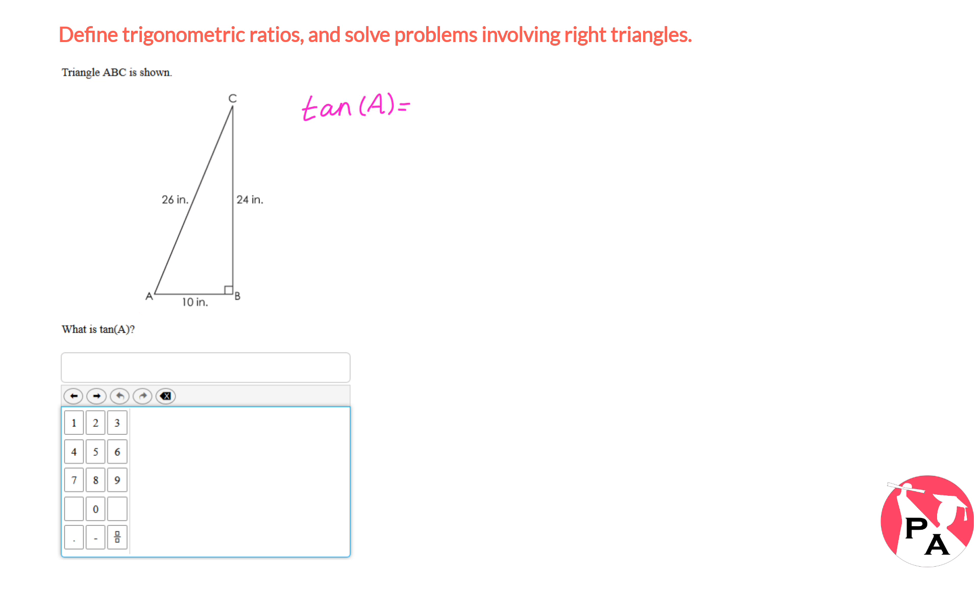The first step is knowing what tangent is equal to. So there is this acronym for those who don't know, SOH CAH TOA. It helps you to identify what sine, cosine, and tangent is equal to. So from this acronym, this part explains what tangent is equal to.